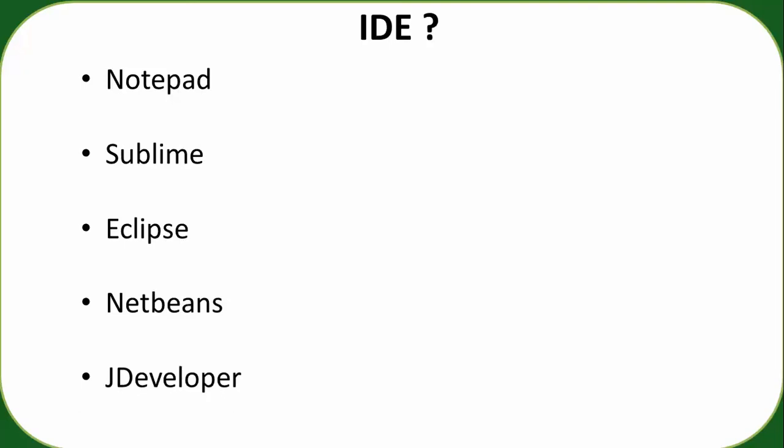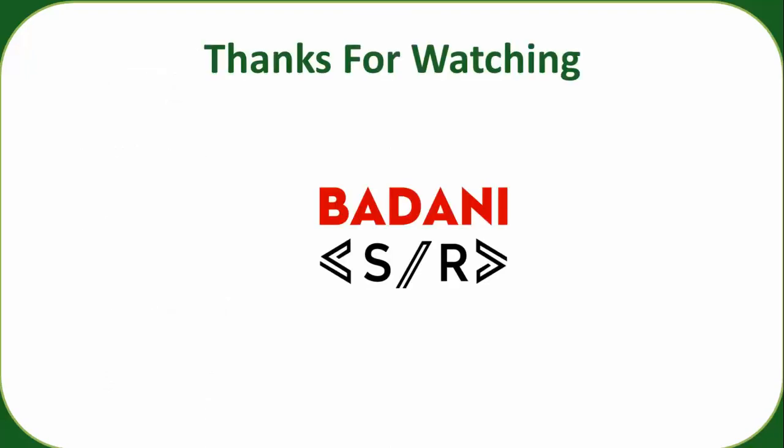So guys, this was a small introduction to Java, in which I told you about the history of Java, the features of Java, and what you can do with Java — and how it is different and better compared to C or C++ languages. In the next video, I will show you how to download Java from the Oracle website and configure your Windows operating system. Later we will also learn to execute on Linux. Thanks for watching, see you soon.